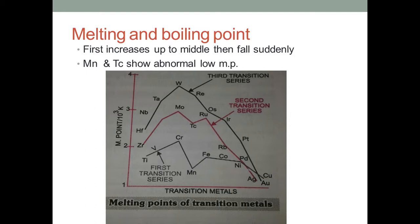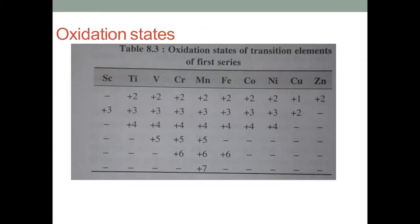So first melting point increases up to the middle, then falls suddenly. Manganese and technetium show abnormally low melting points. Technetium is the first artificial radioactive element synthesized in lab. Both manganese and technetium have abnormal low melting points.